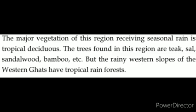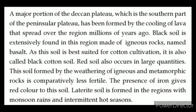The trees found in this region are teak, sal, sandalwood, bamboo, etc. The southern part of the Peninsular Plateau is generally known as the Deccan Plateau. Black soil has been formed by the cooling of lava that spread over the region millions of years ago. It is made of igneous rocks named basalt and is also called black cotton soil. Red soil also occurs in large quantities; this soil is formed by the weathering of igneous and metamorphic rocks and is comparatively less fertile. The presence of iron gives red color to this soil. Laterite soil is formed in regions with monsoon rains and intermittent hot seasons.